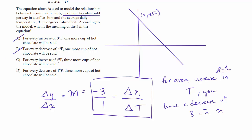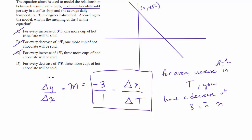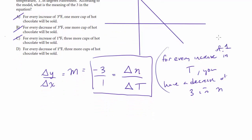For every increase of 1 degree Fahrenheit, 3 more cups of hot chocolate will be sold. That's the opposite, right? If we increase the temperature by 1, we are decreasing the number of hot chocolates sold by 3. How about D? For every decrease of 1, 3 more cups of hot chocolate will be sold. Notice that's the opposite of this case.